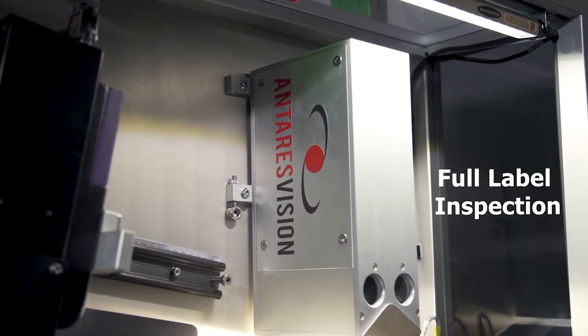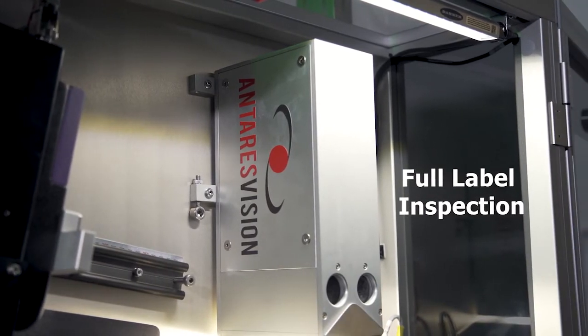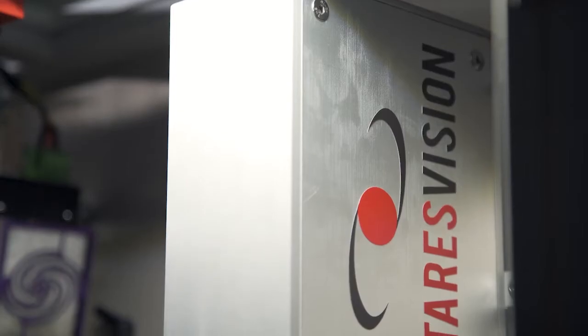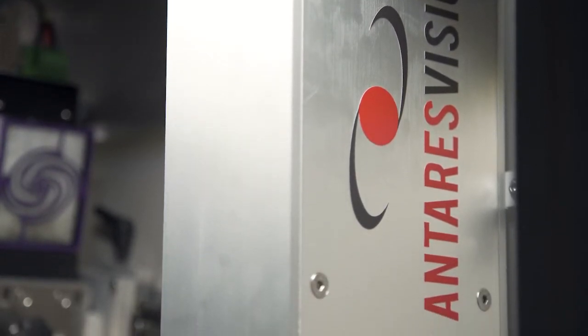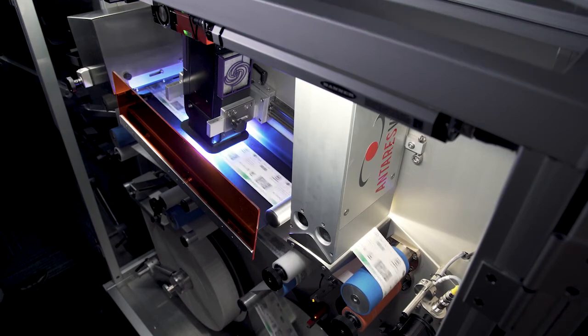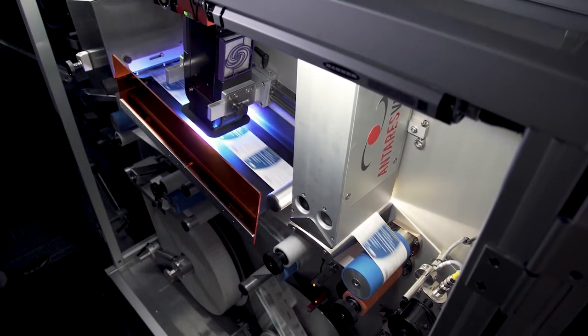The Autonomy also provides the option for full label inspection with Antares. The Antares vision inspection system works in real time for both static artwork and variable data, tracking every label with reject capabilities.